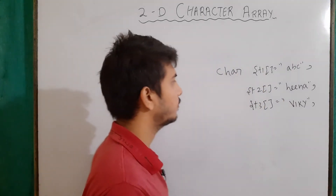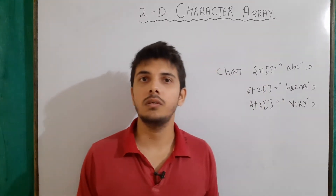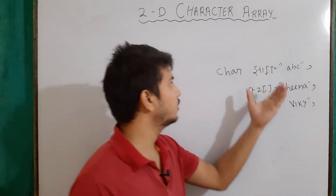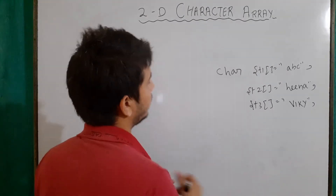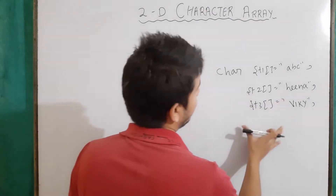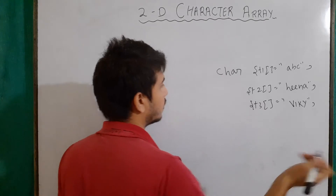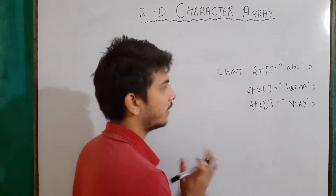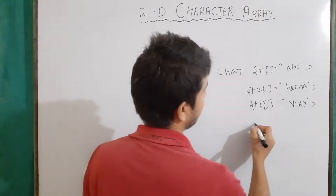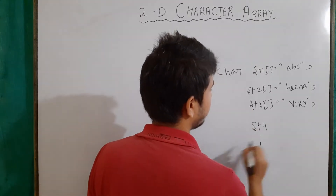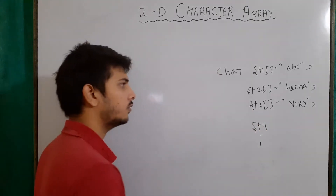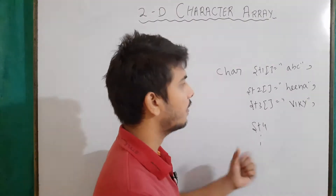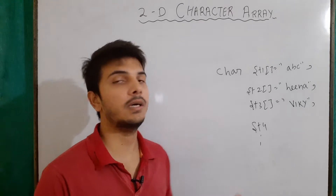Now let's say I want to store ten names, or hundred names, or thousand names. Then I can't use the same format — it is not a good approach to make a thousand variables. For example, if I want to store names of hundred students, I would write ST4, ST5, ST6, ST7 and so on. Similarly, for taking input, I have to write each variable. So this is not a good approach. A better approach is to use a two-dimensional character array.